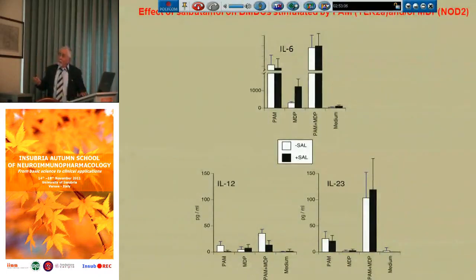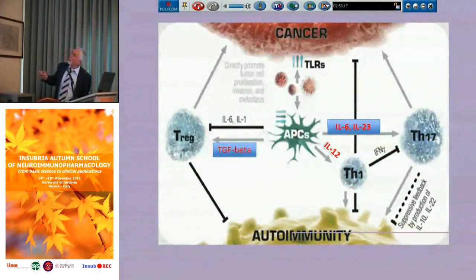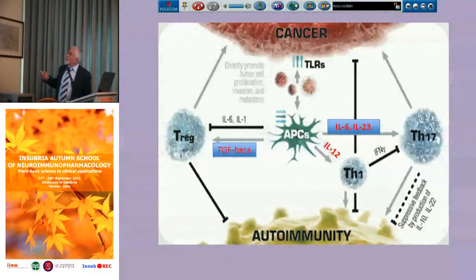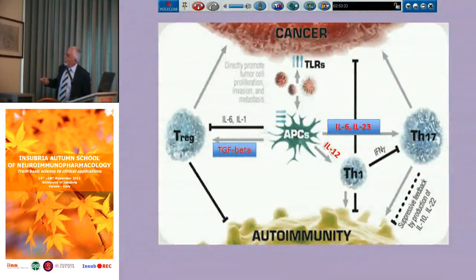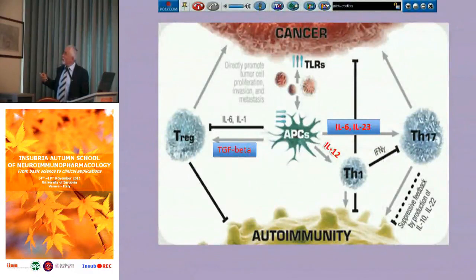This IL-23 and IL-6 increase induced by beta-2 agonists suggested that antigen-presenting cells could be biased toward inducing a TH-17 response, which is involved in cancer pathogenesis and can induce autoimmune diseases. For example, psoriasis is believed to depend on hyperactivity of TH-17 cells, and other inflammatory diseases involving TH-17 are characterized by production of IL-17.